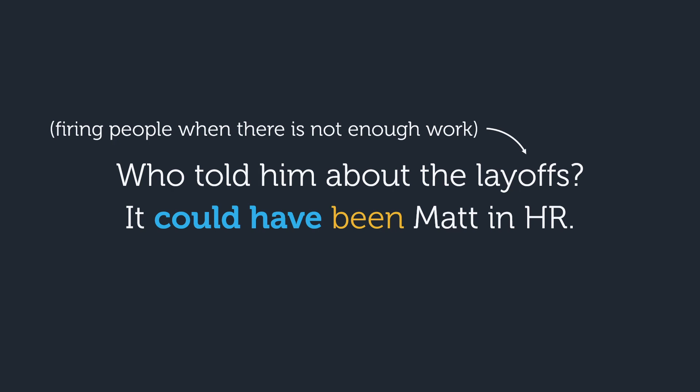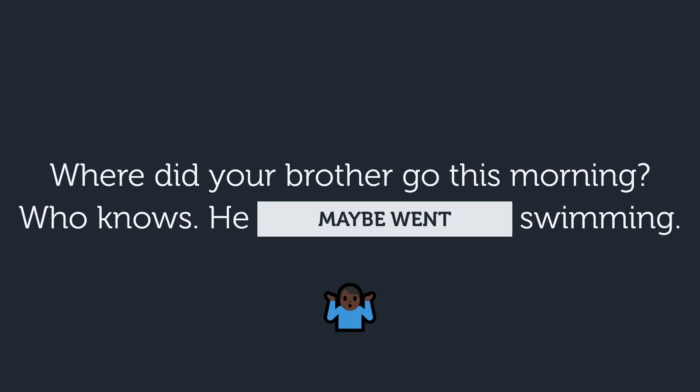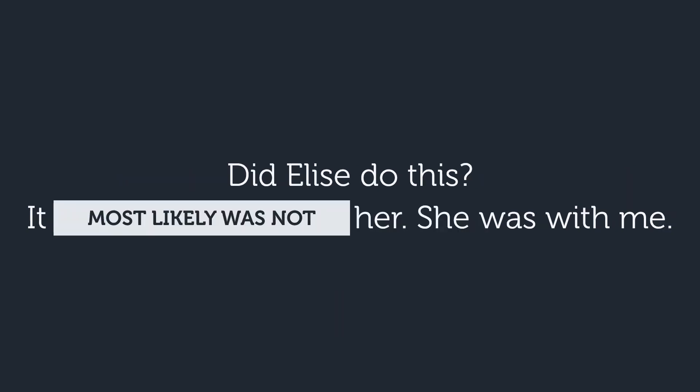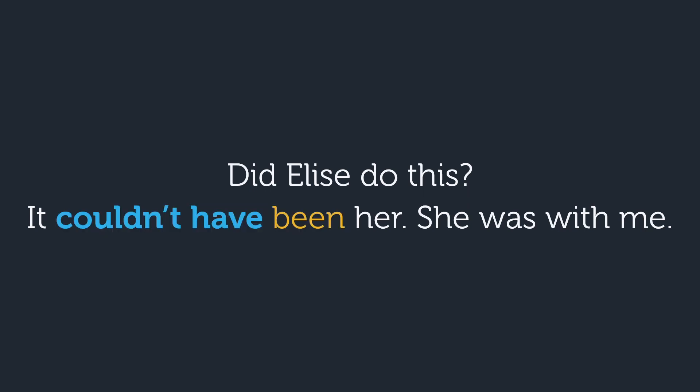By the way, layoffs refer to when a company fires workers due to a lack of money or available work. Another example: Where did your brother go this morning? Who knows — he could have gone swimming. And: Did Elise do this? It couldn't have been her — she was with me. As you can see, you can also use the negative form of 'could' to refer to the possibility that something did not happen using this same structure.